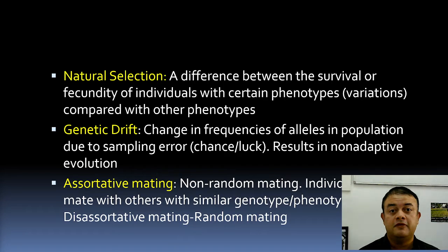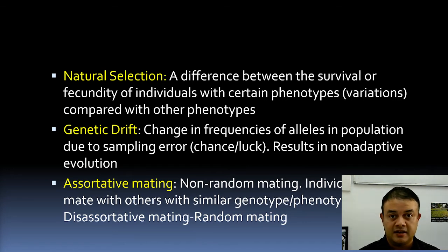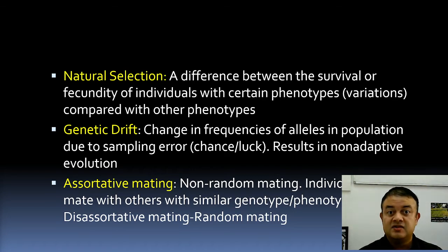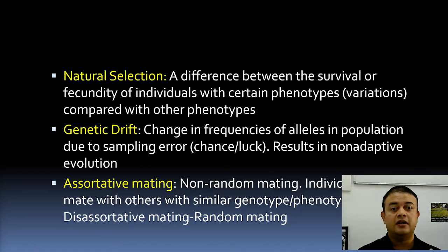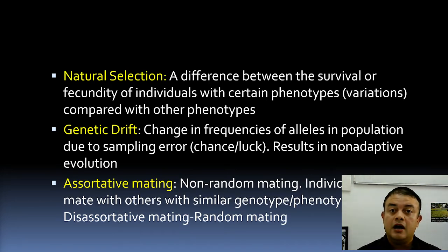Selection can be defined as the difference in survival or fecundity of individuals with certain phenotypes compared with other phenotypes. There is a differential advantage for certain variants. These variants have an advantage because they increase fitness — they are adaptive and can survive to reproduce better by exploiting the local environmental niche. Natural selection is differential survival and reproduction of variants because they are adapted to the environment.